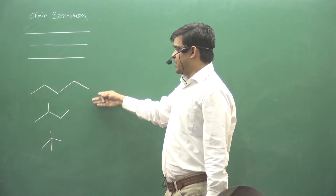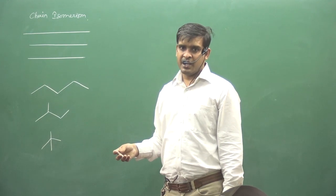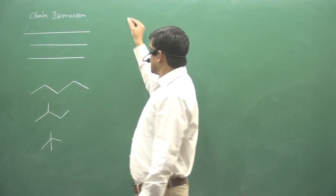Sahi hai? To kitne hue? Panch, char, teen. Ye ek dusre ki kya hai? Chain isomers hai. Pakka.